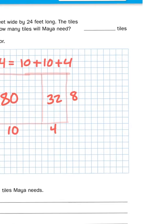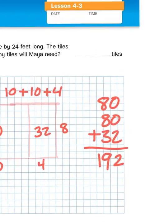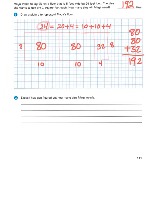So let's add those together. 80 plus 80 plus 32. I'm going to bring down the 2. 8 plus 8 is 16, plus 3 more, that's going to give me 19. What do you know? It's 192. So Maya is going to need 192 tiles to completely fill in her floor.